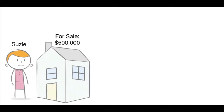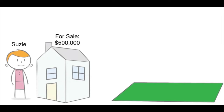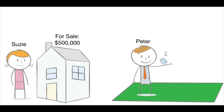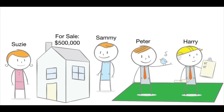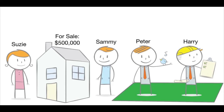Susie's selling her house for $500,000 in a neighborhood that has a nearby parcel of land also for sale. Peter plans to develop the land into a beautiful park and bird sanctuary, and Harry plans to build a low-cost housing development. Sammy comes along and is interested in buying Susie's house for a cash deal, but he won't have the cash available for three months and worries the house will be sold to someone else in the meantime.